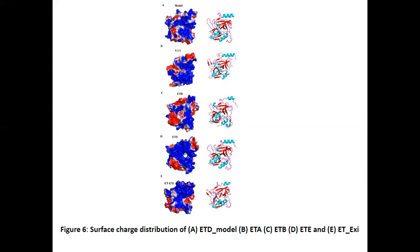ETE is mostly positively charged with a little negatively charged region. Exfoliative toxins from other species are also mostly positively charged, with some neutral charge distribution and negatively charged regions.